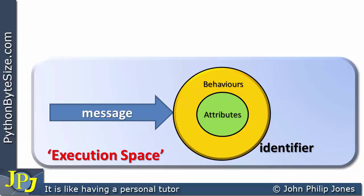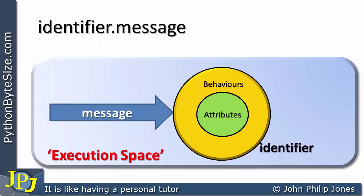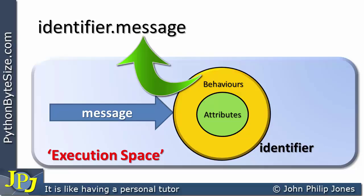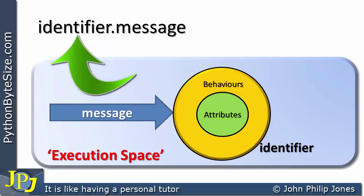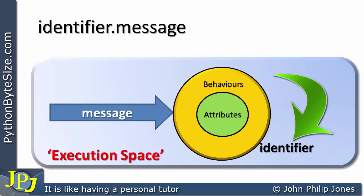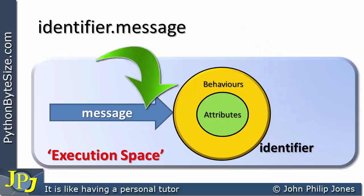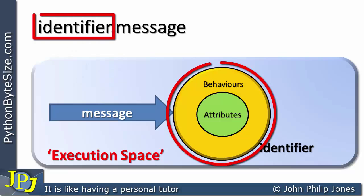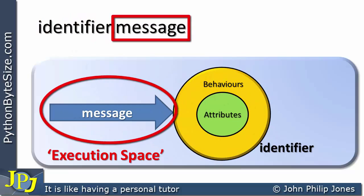In the last video we introduced dot notation. This is referred to as dot notation because if you look in the middle there's a full stop, or a dot. Either side of the full stop, on one side we have the name of the object and on the other side we have the name of the message that's going to be sent to that object. We always need the identifier of the object because there could be more than one object in the execution space, so you have to specify to which object you're sending the message.